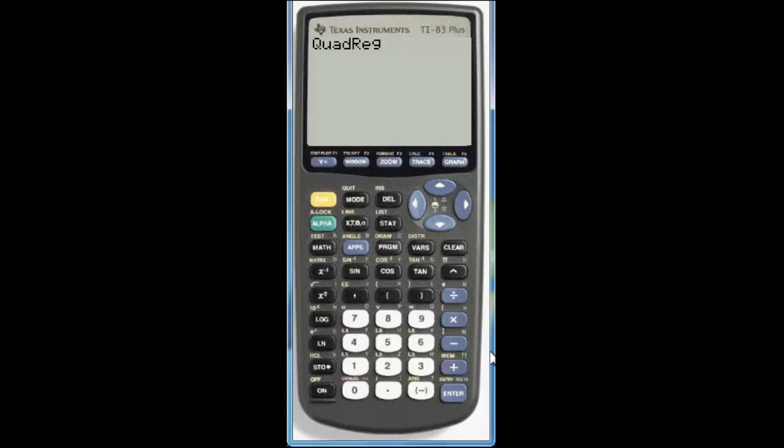Now if you look at part b it says use your graphing utility to graph the model and compare the data with the model. So we are going to go ahead and take care of graphing the model while we do the quadratic regression. First we want to enter in which list is the x list. Put a comma in. Then which list is the y list. So we'll start with second l1 since that's where we entered the years. Comma. Second l2 since that's where we entered the corresponding CPI's.